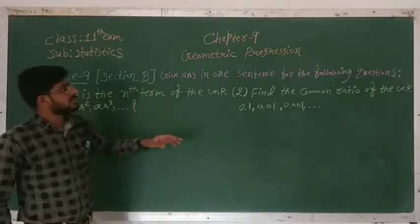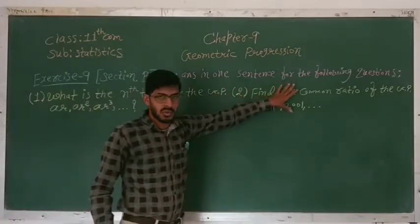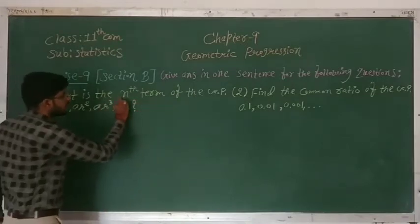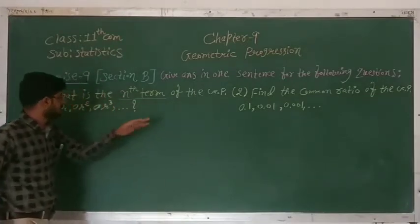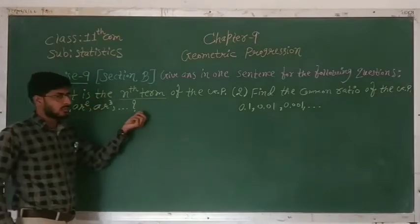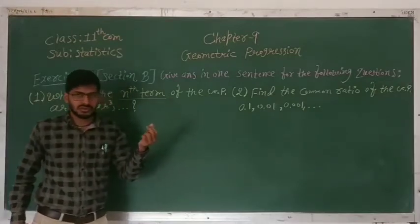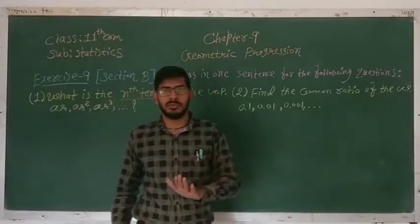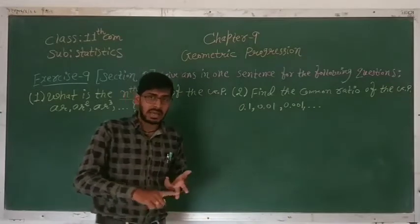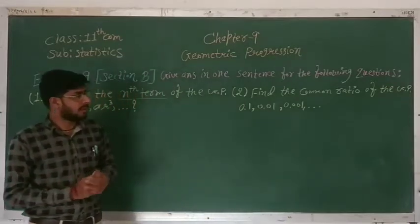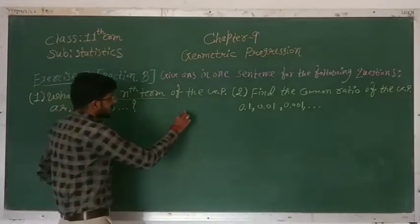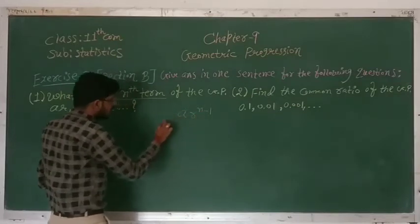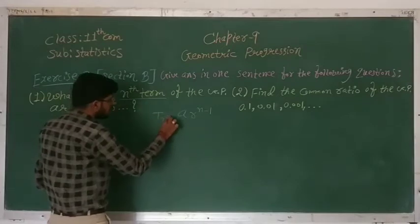Give answers in one sentence for the following questions. The first question is: what is the nth term of the GP: A·R, A·R², A·R³ and so on? We have to find the nth term of the GP. So first we recall the formula. If the first term is A and the common ratio is R, then the nth term of a GP is given by A into R raised to n minus 1.